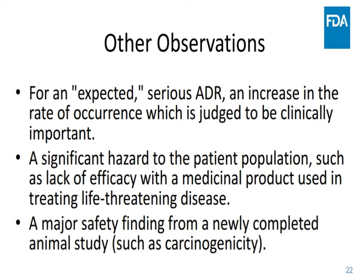Some other observations. For an expected serious ADR, an increase in the rate of occurrence which is judged to be clinically important should be reported as well — for example, if you have a clinical trial in a new indication or a new patient population. A significant hazard to the patient population, such as lack of efficacy with a medicinal product used in treating a life-threatening disease, should also be reported. And a major safety finding from a newly completed animal study, such as carcinogenicity, because some animal studies are still ongoing while the human studies are ongoing.